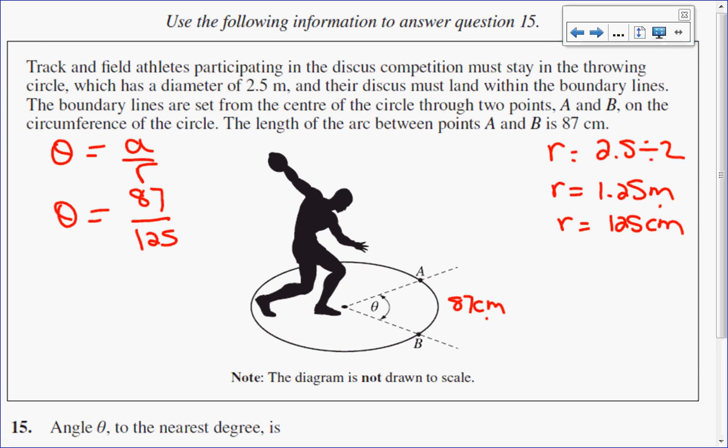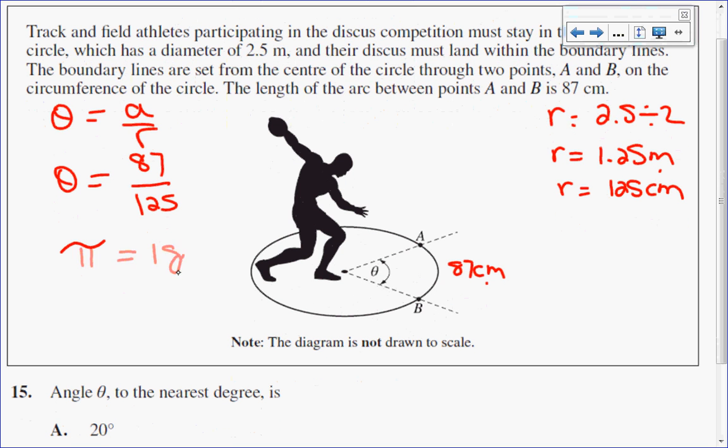So this would be the answer in radians. So I want to switch that into degrees. I know that pi radians is the same as 180 degrees. Let's try that again. So I want to know 87 over 125 radians is the same as how many degrees. So I have a little proportion here.